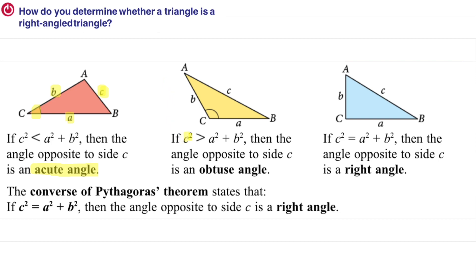Second case: if you calculate C squared and C squared is equal to A squared plus B squared, then the angle opposite to side C is a right angle, or 90 degrees. So which case can we use the Pythagorean Theorem? It is in the third case - when C squared equals A squared plus B squared. That is what we call angle C a right angle.